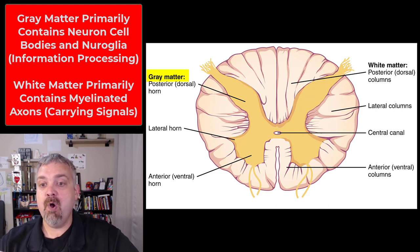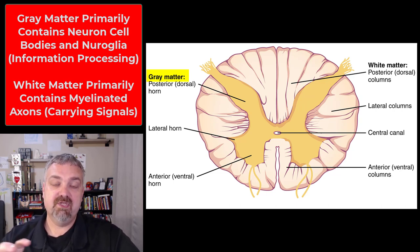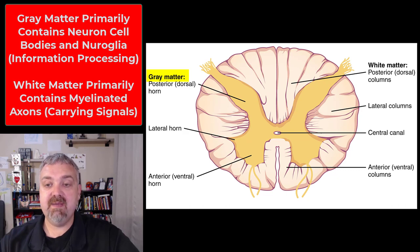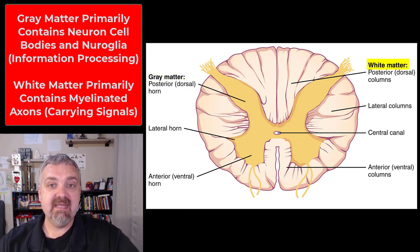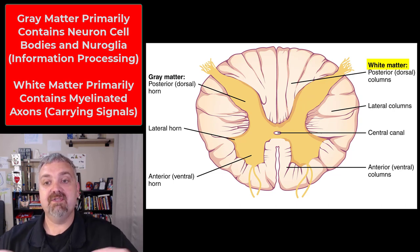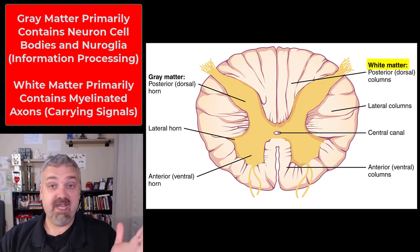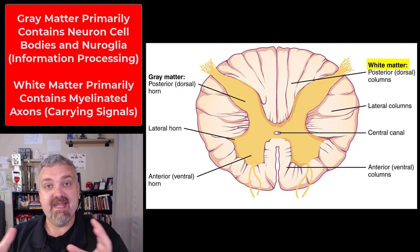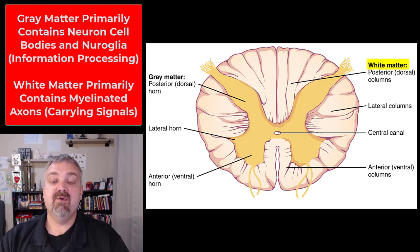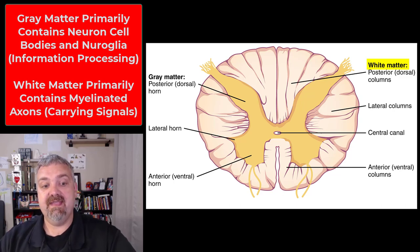We'll talk about the lateral horn in just a moment. So that's the gray matter, which is where the cell bodies are and information is being processed. The white matter all around it is white from the fat that myelinates most of our nerves, and white matter is going to be what's carrying information up and down the spinal cord — think transport. The biggest difference from the brain is that the brain has gray matter on the outside and white matter on the inside, whereas the spinal cord has this butterfly-shaped gray matter on the inside and white matter on the outside.